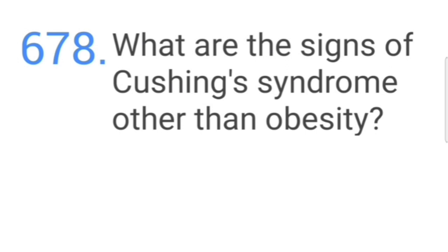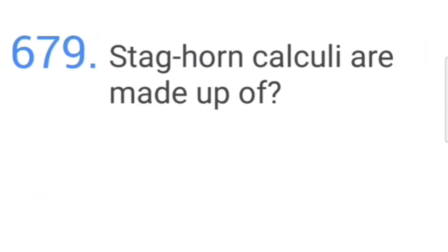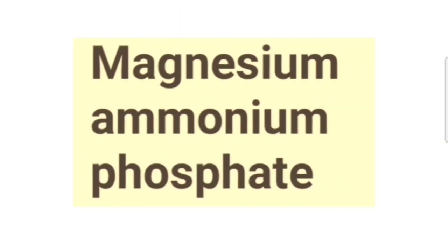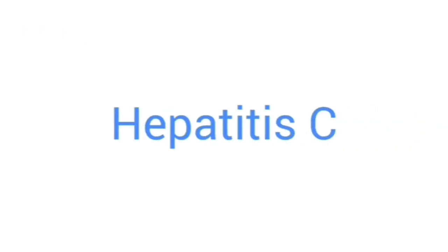Signs of Cushing syndrome other than obesity include a posterior neck fat pad and thin extremities. Staghorn calculi are made up of magnesium ammonium phosphate. The viruses that cause post-transfusion hepatitis include hepatitis C.